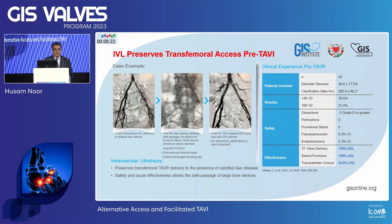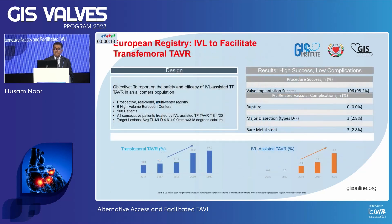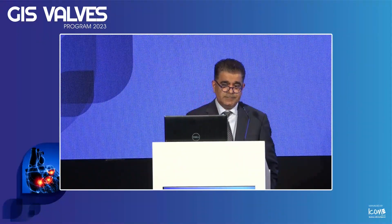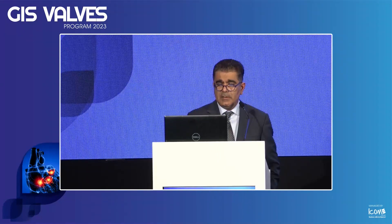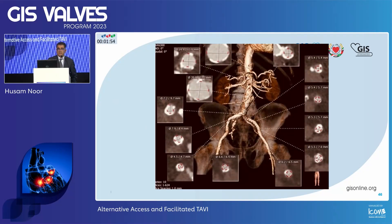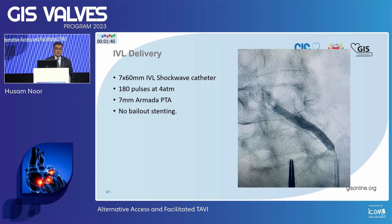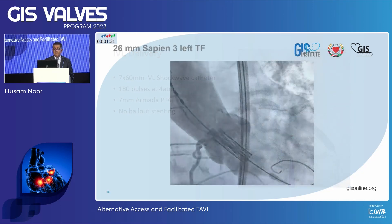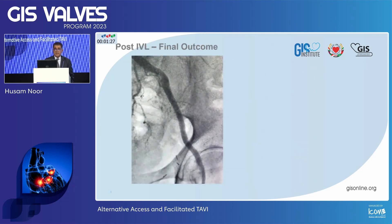For transfemoral facilitated access: the principle is straightforward — you cross the lesion, put a peripheral IVL catheter, and from the European registry, with these hostile femoral arteries the success rate to complete TAVR cases was about 98%. We describe a case utilizing IVL for transfemoral access where the vessels were too small with circumferential calcification. We went through the left femoral access, placed a 7.0, 60-millimeter Shockwave catheter, delivered pulses, ballooned without any bailout stenting, and completed TAVR with a 26-millimeter SAPIEN. Final check looked very good.